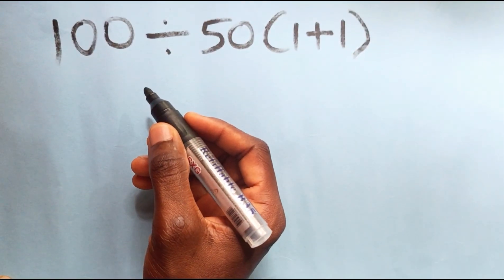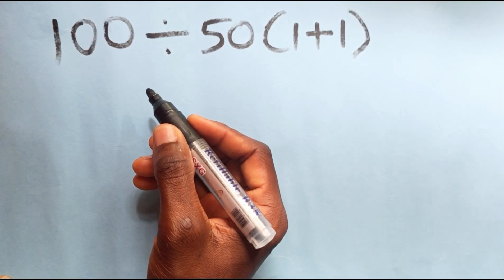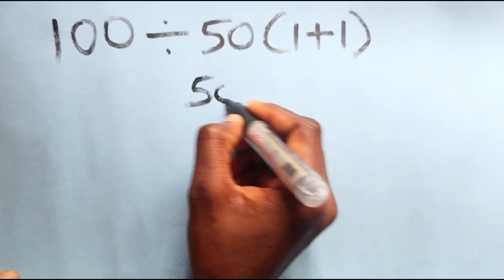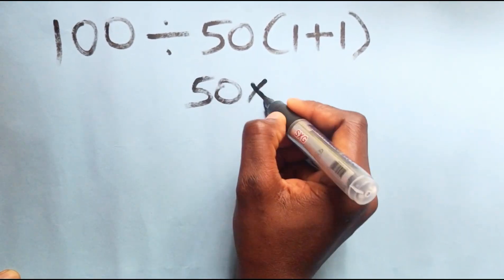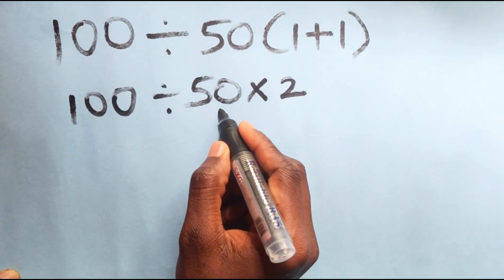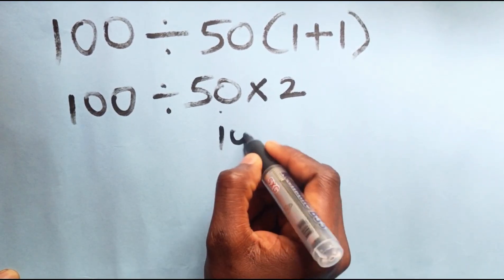Let's solve this question together: 100 divided by 50 into brackets 1 plus 1. 50 times 2, then you have 100 here. 50 times 2 will give you 100.